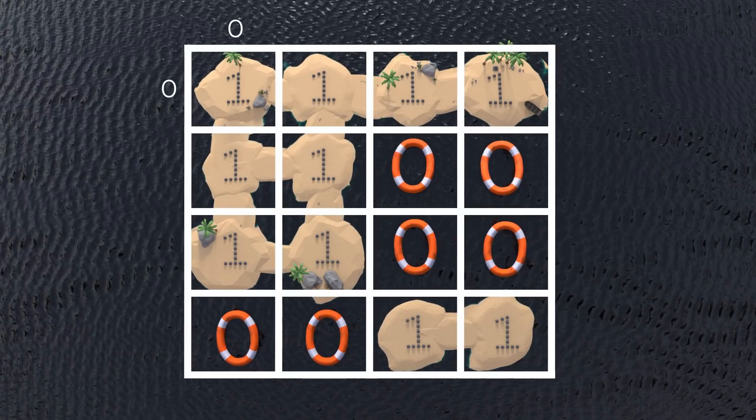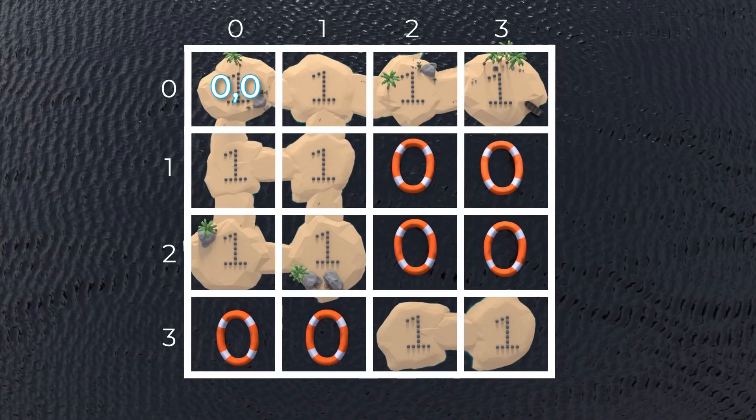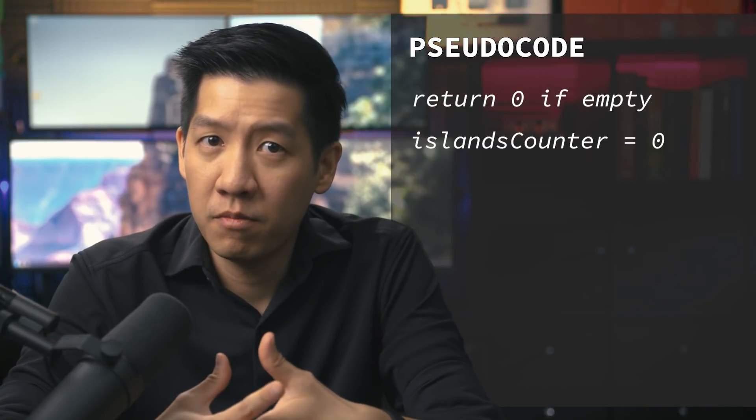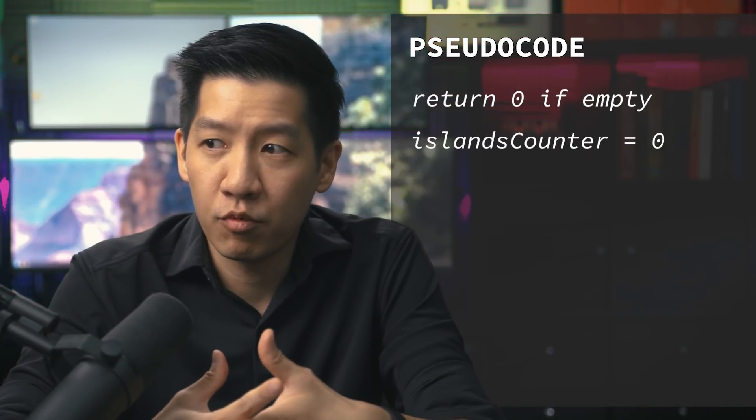Let's set up the grid so the top left row-column is 0,0. A helpful strategy is to handle the edge cases or boundary conditions so you don't forget about them later. For example, what happens if you receive a null or empty input? We should probably just return zero islands. We also have an islands counter that should start as zero.